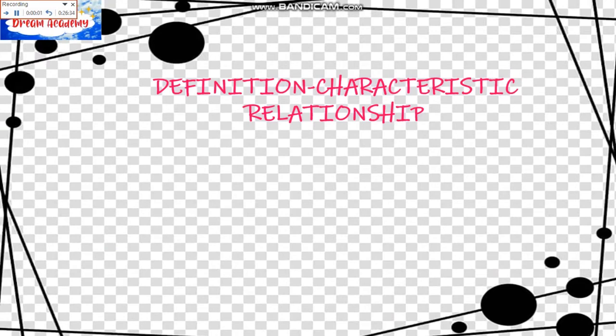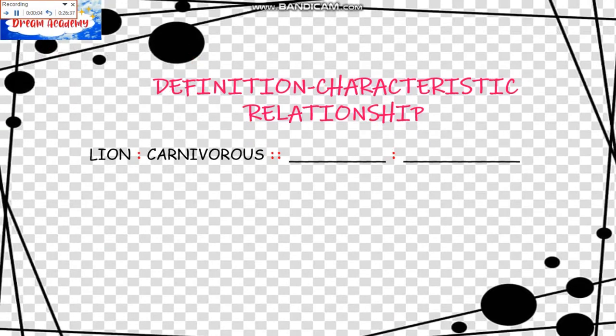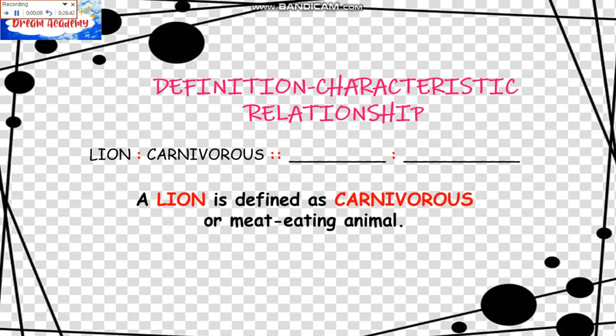Definition or Characteristic Relationship. The example is: Lion is to Carnivorous as blank is to blank. A Lion is defined as Carnivorous, or a meat-eating animal. When looking for the answer among the choices, it should follow this order: something is defined as something.